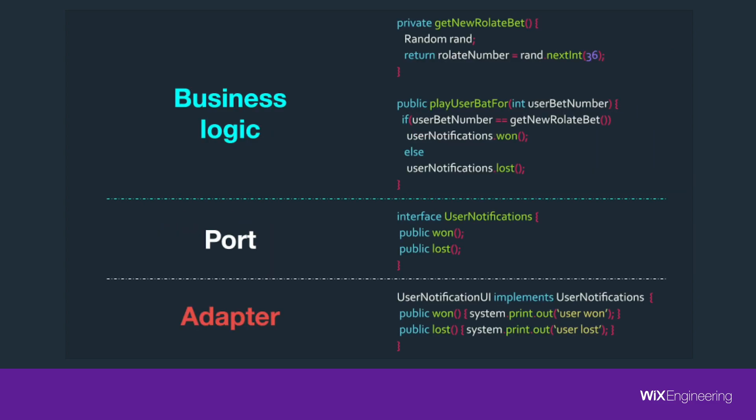Now everything looks good. In the method 'play user bet,' we have only the business logic, which knows we should notify the user but doesn't know how — thanks to the interface named UserNotifications. Elsewhere, we hold the technical details in the adapter UserNotificationUI, which holds the detail of how we communicate the notification to the user — in this case, simply by system print-out. By doing that, we separate the technical details from the business logic.